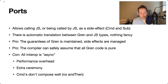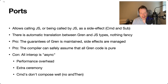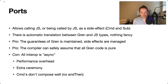First, we have ports. Ports allow us to call JavaScript, or allow JavaScript to call us, as a managed side effect. That means that if you're calling JavaScript, we get a command in return — it's a purely managed side effect that works like any other managed side effect in GREN. And if JavaScript is calling us, that is exposed as a subscription. Both of these require that you set up an Elm architecture, essentially exposing side effects as messages in a message-passing state machine.